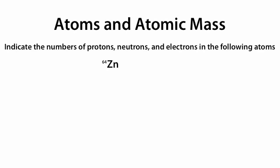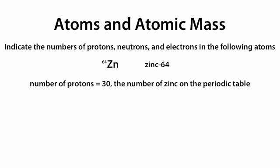We'll also be given problems where we have Zn with just the number 64 on the top left, or zinc-64. The number of protons is still equal to 30, because that's the number of zinc on the periodic table, which is equal to the atomic number — always the same in any periodic table. If any element did not have 30 protons, then it would not be zinc.